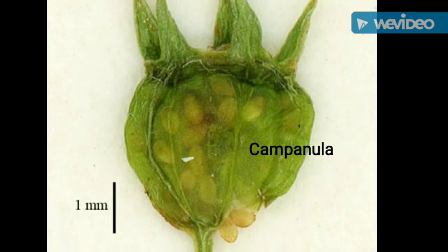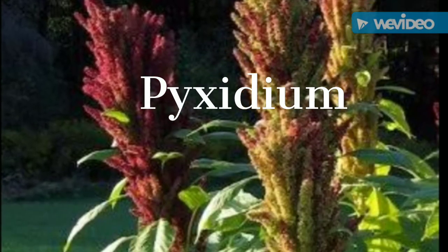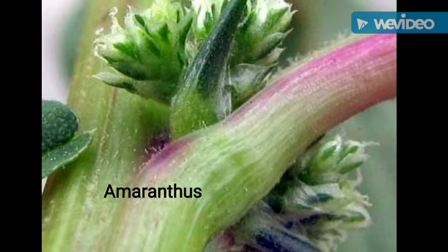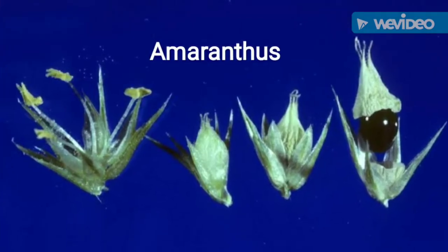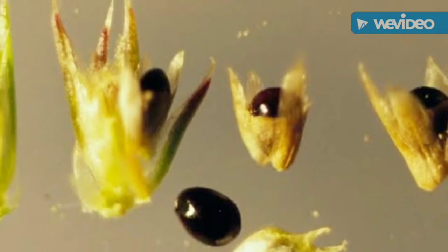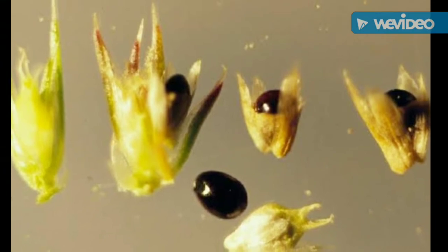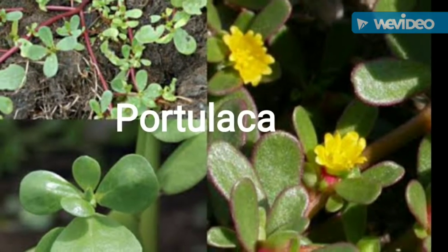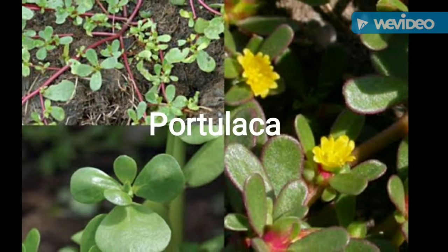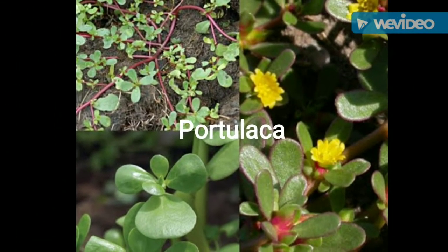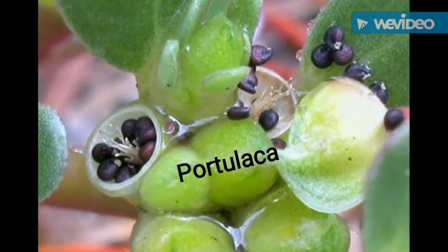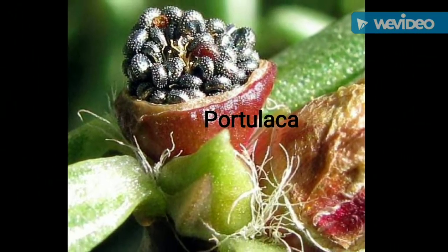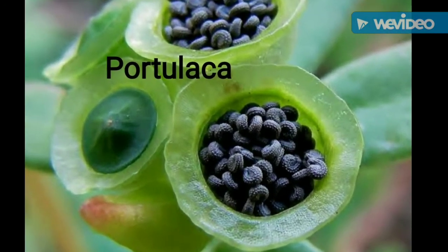Another one — pyxidium. In this pyxidium fruit, example: Amaranthus, the fruit is developed from a superior ovary. It is a spherical-shaped capsule in which the pericarp splits open transversely. The upper part falls off as a lid and the seeds are left in the basal cup structure. Another example: Portulaca oleracea — a very beautiful plant. It is also one of the pyxidium fruits.